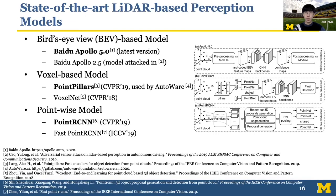To begin with, I want to introduce some basic backgrounds of LiDAR-based perception models. There are three mainstreams: bird's-eye-view-based, voxel-based, and point-wise models. In this work, we target Baidu Apollo 5.0, which is the latest version, PointPillars, and PointR-CNN as three representatives — each achieving state-of-the-art performance in their class.